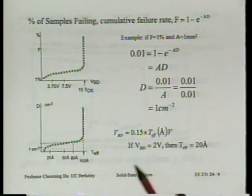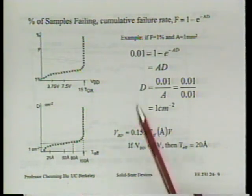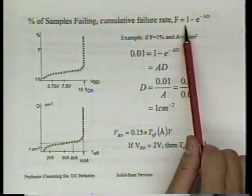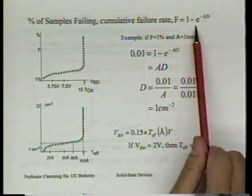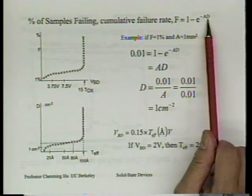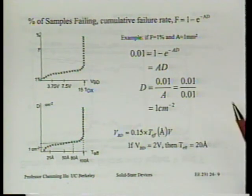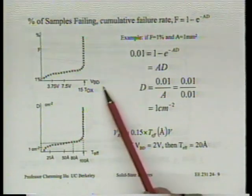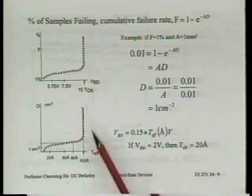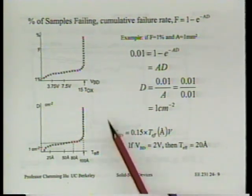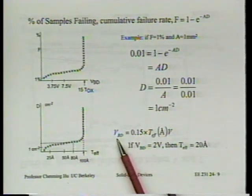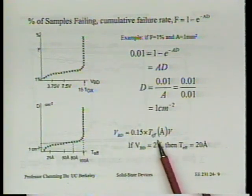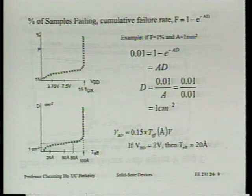We went through this last time: the relationship is failure equals 1 minus exponential of negative area of the sample times defect density. There's also a relationship between the breakdown voltage and t-effective. The breakdown voltage is equal to 0.15 times the thickness, and we went through this last time.